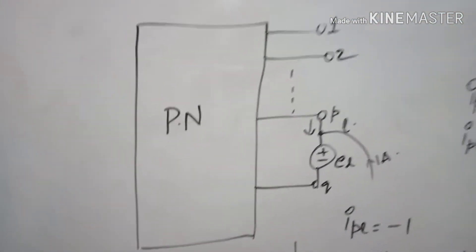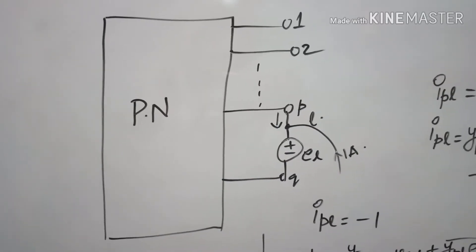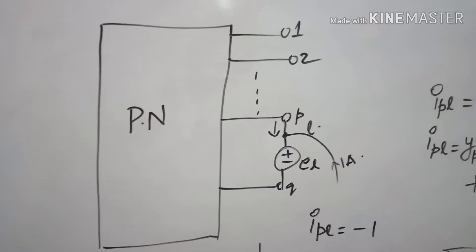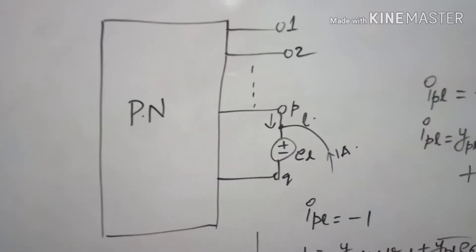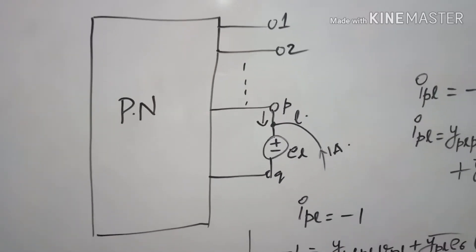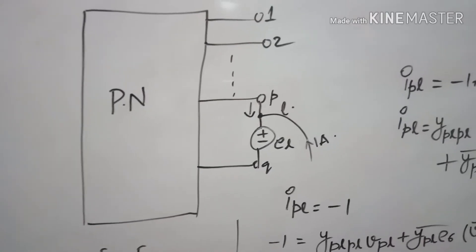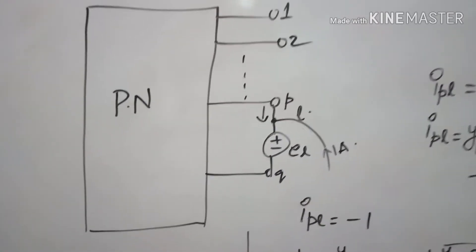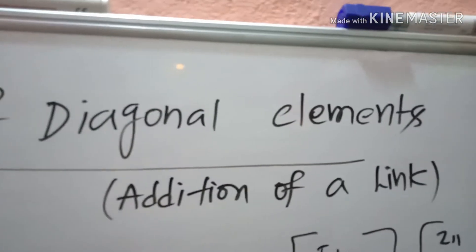If you observe, this is the partial network with nodes one, two, and so on. We know that already we have a link between two existing buses p and q. In between the two buses, in series to the link, we added a voltage source el in such a way that the current through the element pq is zero, as we have seen in our last video.